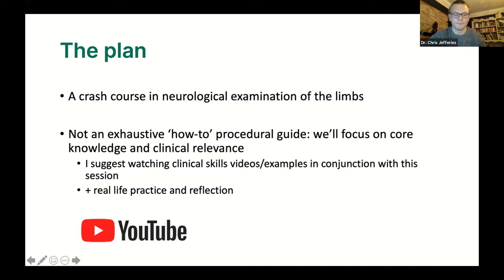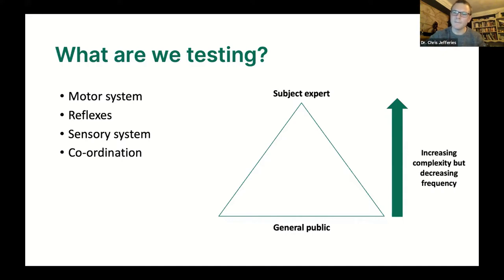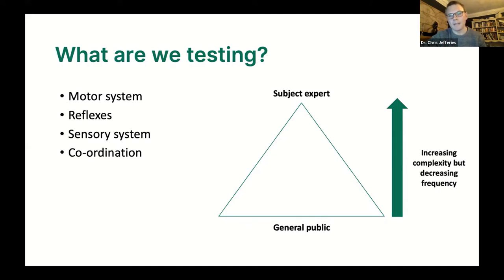What are we testing when we perform a limb examination? We can break the neurological examination down into several components. We're testing the motor system — when a patient moves their arm, we're testing motor pathways starting in the primary motor cortex, travelling down the pyramidal tracts and corticospinal tract, crossing over in the medulla, going down the spinal cord to the arm. We also test reflexes, the sensory system via ascending spinal pathways, and coordination.